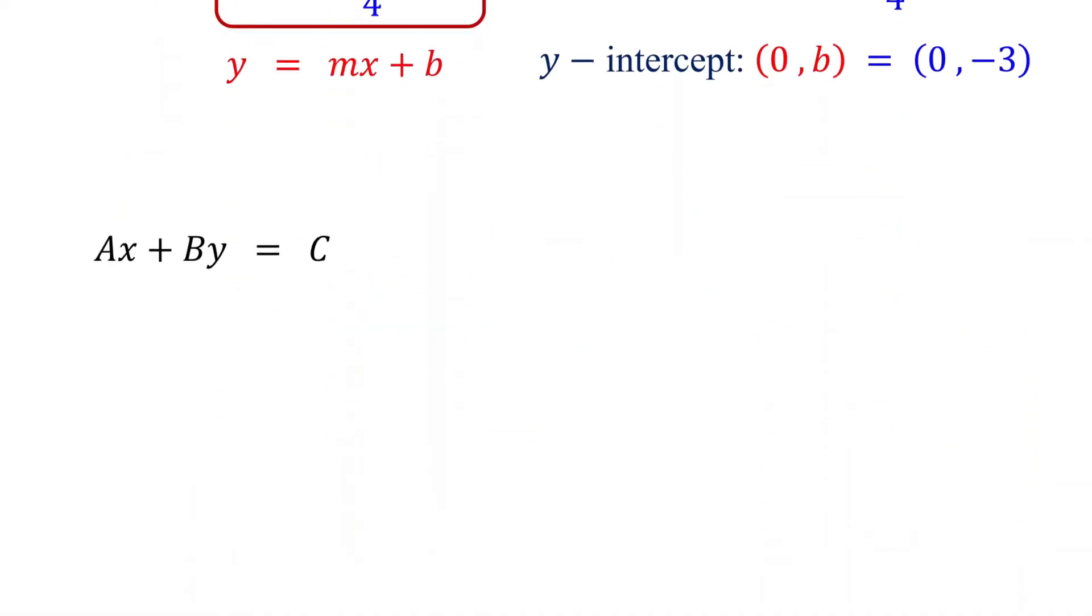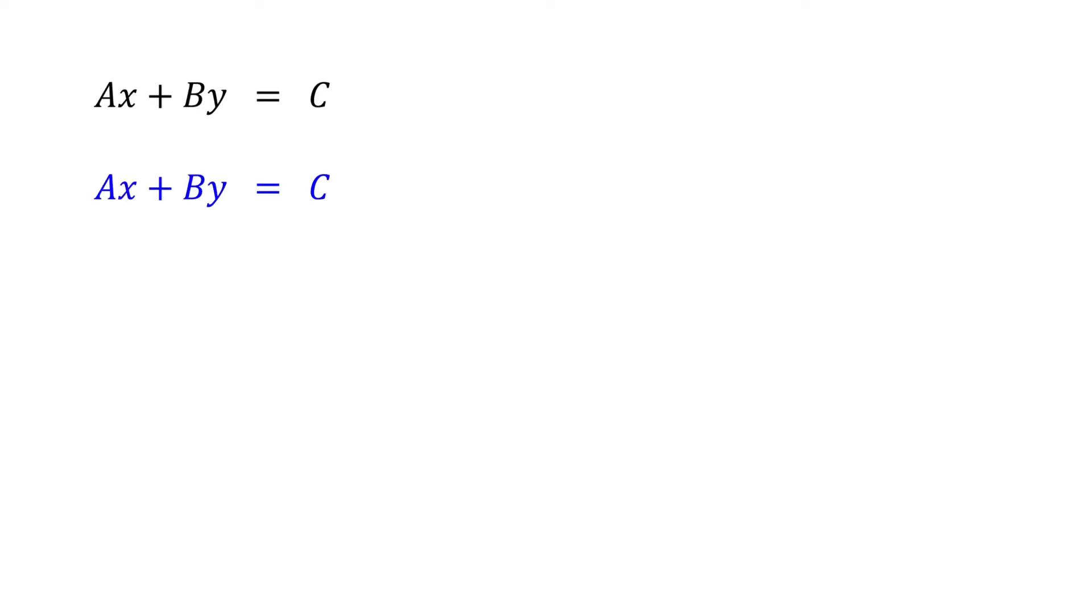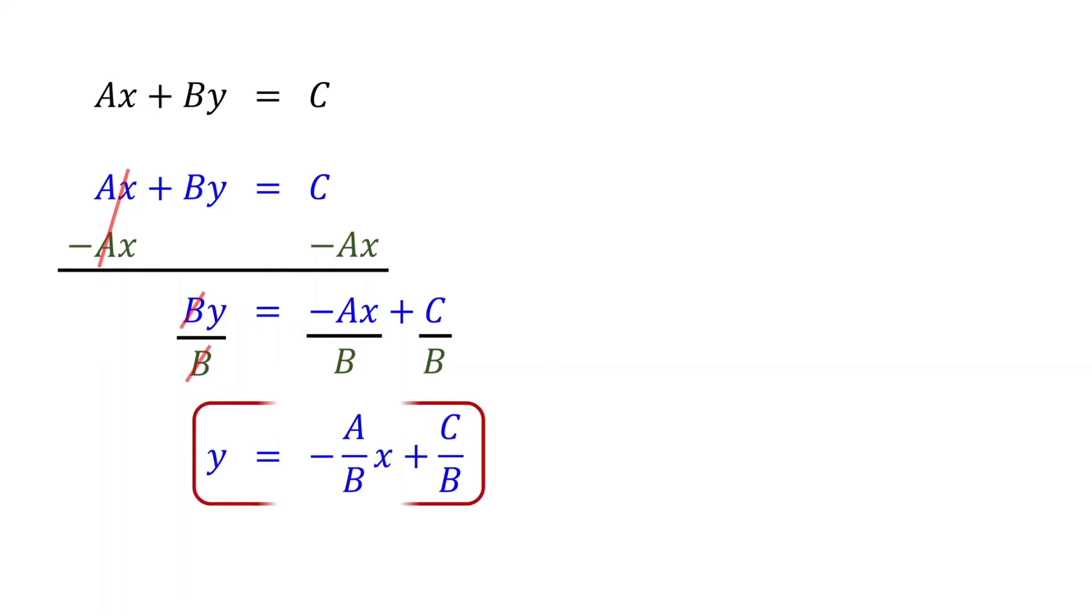Before we end, let's take a look at a general case. We will convert this to slope-intercept form. By the way, if you have any questions, please leave a comment below. The steps remain the same. First, move the x-term to the right side by subtracting it from both sides. Then, isolate y by dividing both sides by its coefficient. These cancel out. Now we have the equation in slope-intercept form. If you compare them, you can see that the slope is negative A over B, and the y-intercept is 0, C over B.